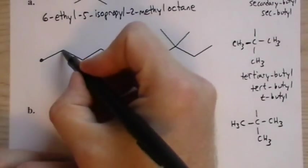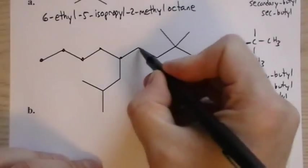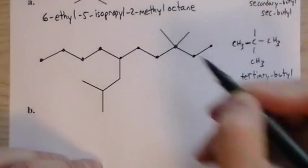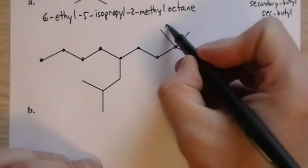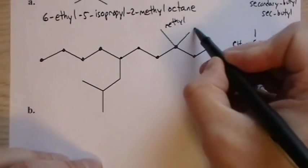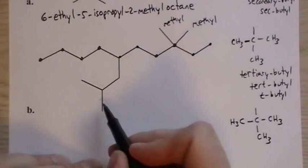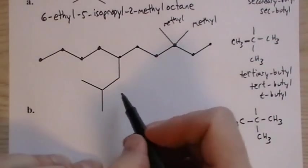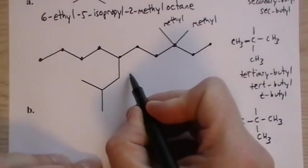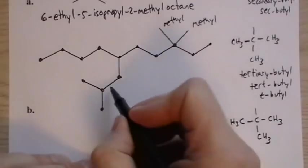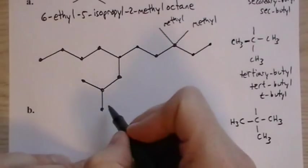Alright, so it's best to first find the parent chain, which is definitely this from this side. Get those numbered. Then we have a methyl group here—don't really have to label those. But then we have this guy here.